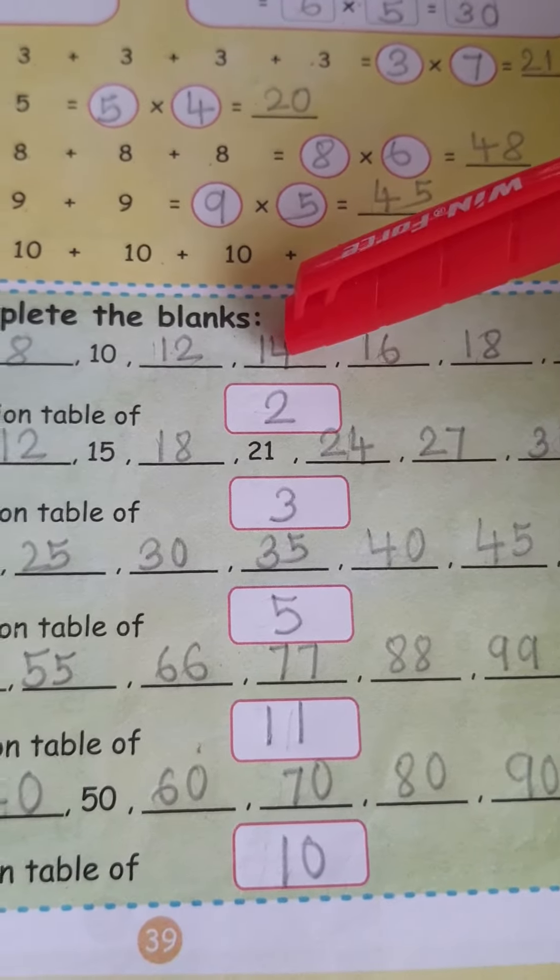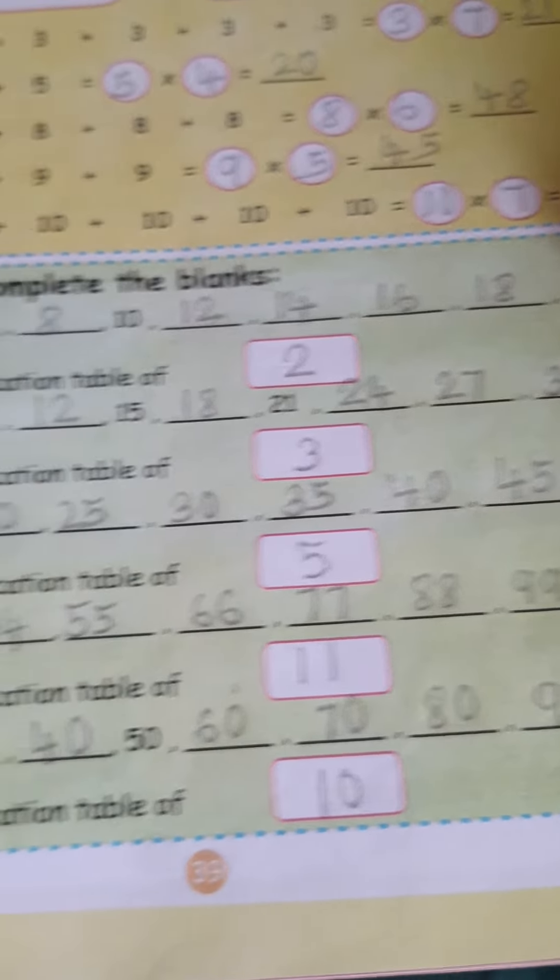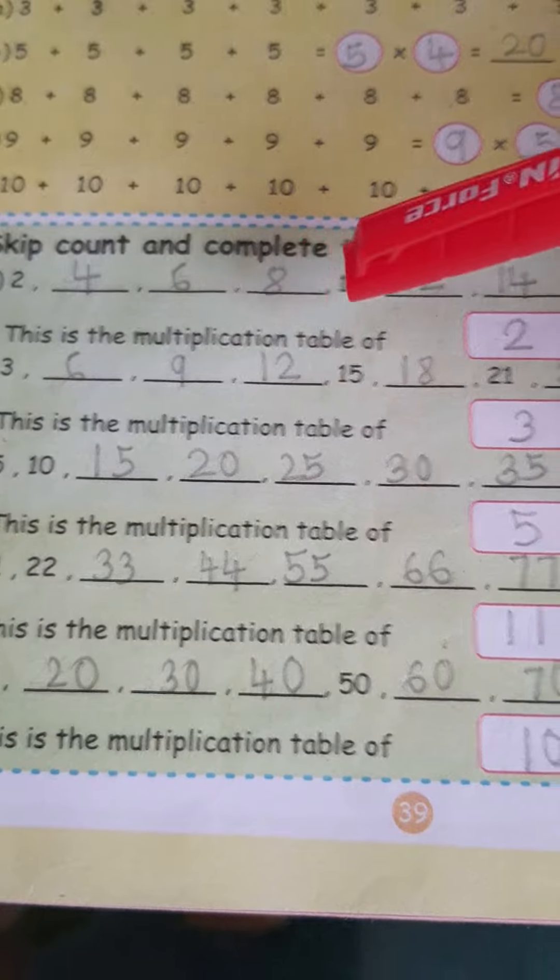2 6s are 12. 2 7s are 14. 2 8s are 16. 2 9s are 18. 2 10s are 20. So, what is here? This is the multiplication table of 2.